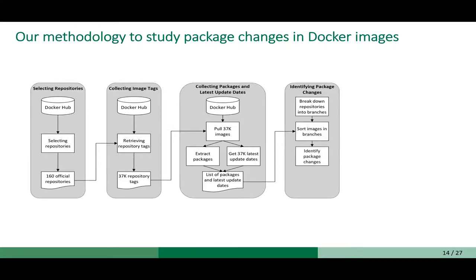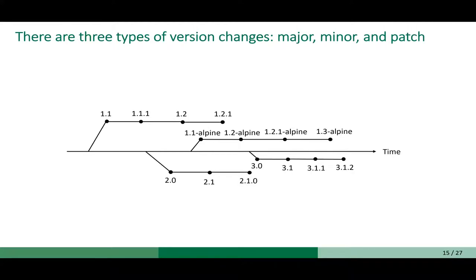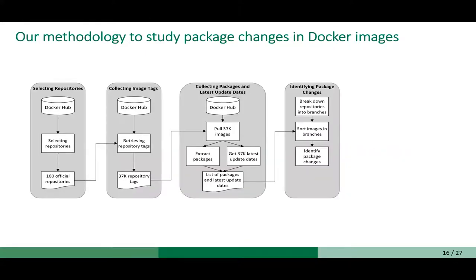We needed to identify package changes. There are three types of changes that could happen: a major change, which means there was an incompatible API change; a minor change, which means added functionality that is backward compatible; or a patch change, which means a backward compatible bug fix. We will use this information to answer which type of application tends to have more package changes.